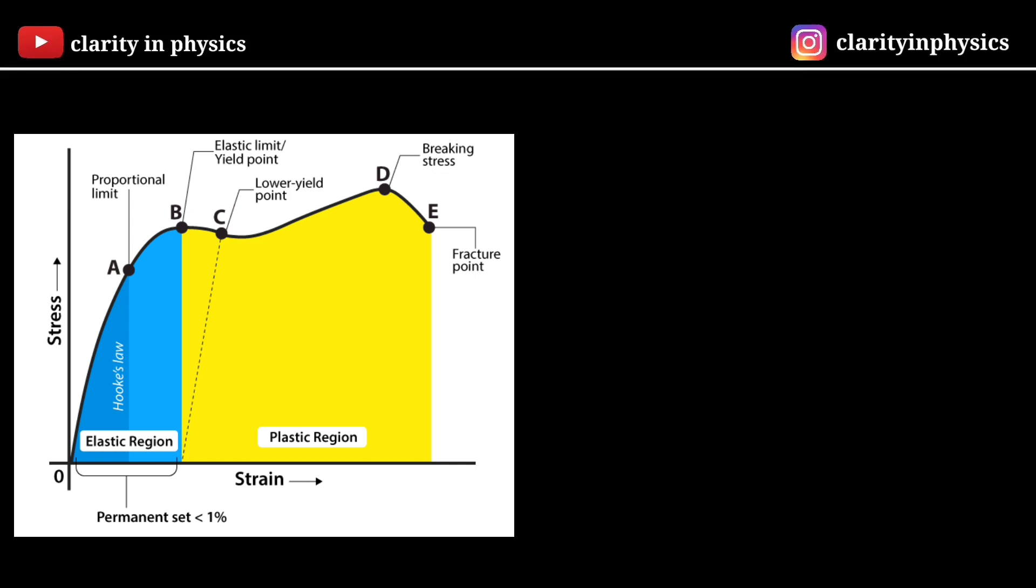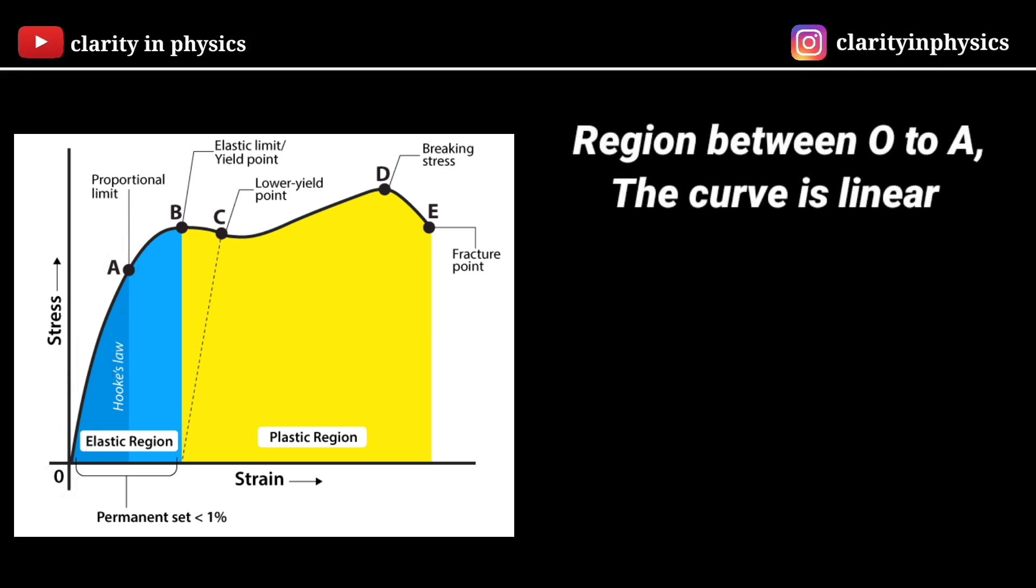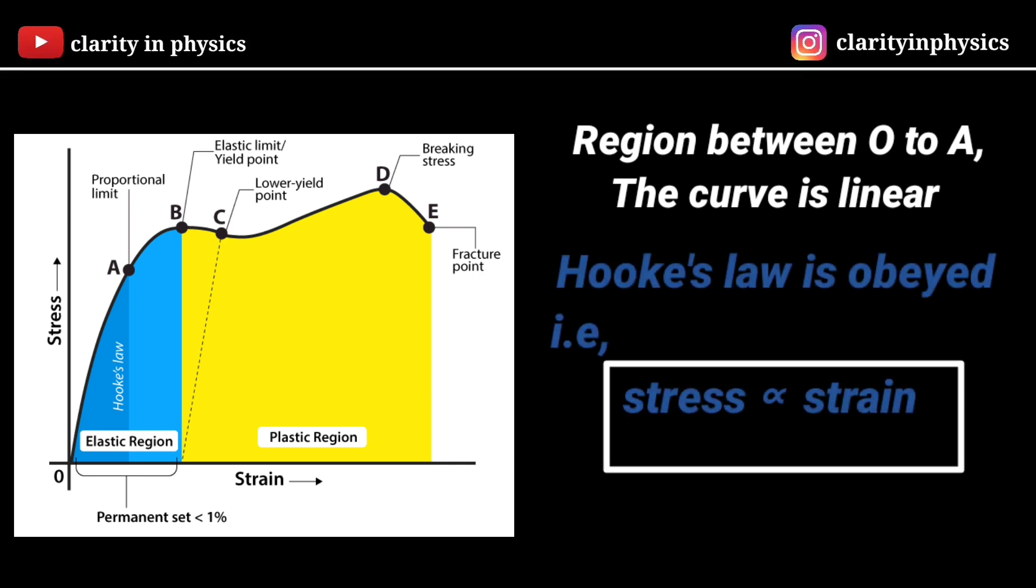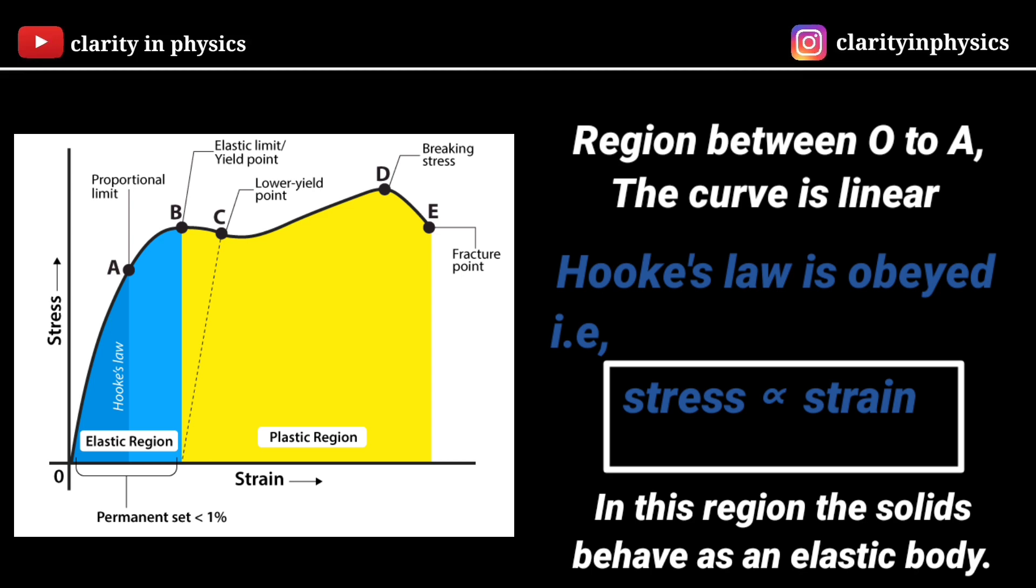From the graph we can see that in the region between O to A, the curve is linear. In this region, Hooke's law is obeyed. The body retains its original dimensions when the applied force is removed. In this region, the solid behaves as an elastic body.